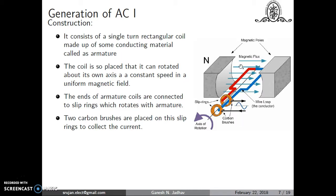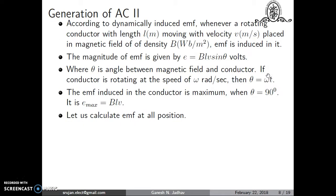The coil is placed in a strong electromagnetic field between N and S poles. According to dynamically induced EMF, when a rotating conductor of length l meters moves with velocity v meters per second in a magnetic field, the induced EMF is e = Blv sinθ, where θ is the angle between the field and the conductor. If the conductor rotates at ω radians, then θ = ωt. The EMF is maximum when θ = 90°, giving e_max = Blv.